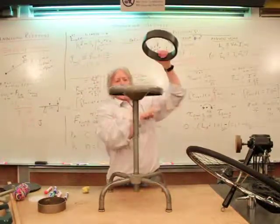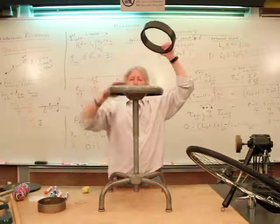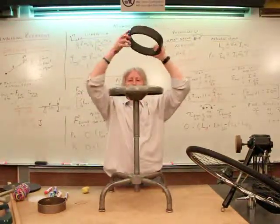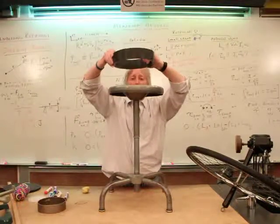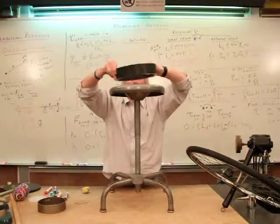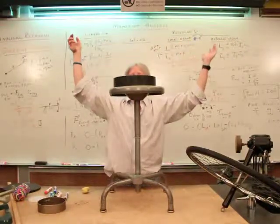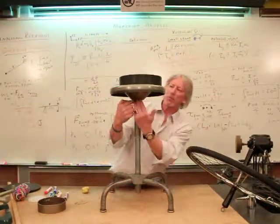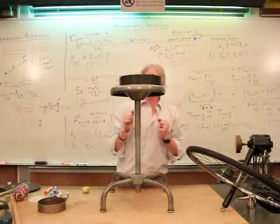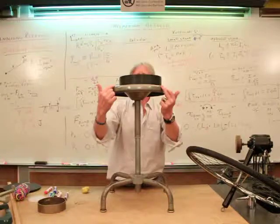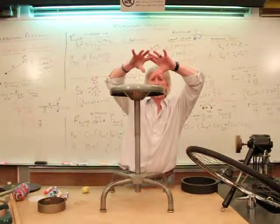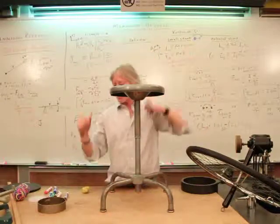So C for chair has angular momentum. R for ring has none. Total angular momentum: this plus zero. After, the total angular momentum is the same. Now, eventually the bearings slow it and stop it, but we're looking at it just after. As this sped up, this slowed down — that was significant and you can see it. The total angular momentum stayed the same while one went up and the other went down.